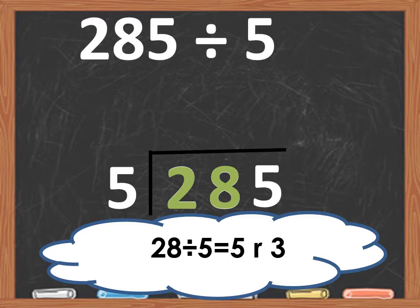Now what do we do with the 5 remainder 3? Well the 5 becomes part of our quotient, and our remainder 3 goes in front of the last digit, 5. Let's put it there. There you go. So our new problem now is 35 divided by 5.